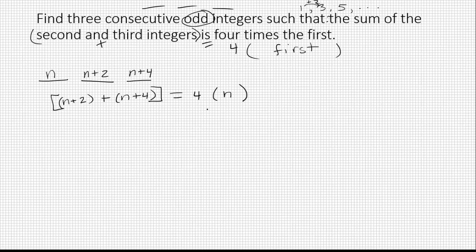n plus two is the second number. And the third number is n plus four is four times the first, which is just n. Okay, let's simplify everything we can. I can actually drop the parentheses and simplify what's inside. n plus two plus n plus four. And that is two n plus six.